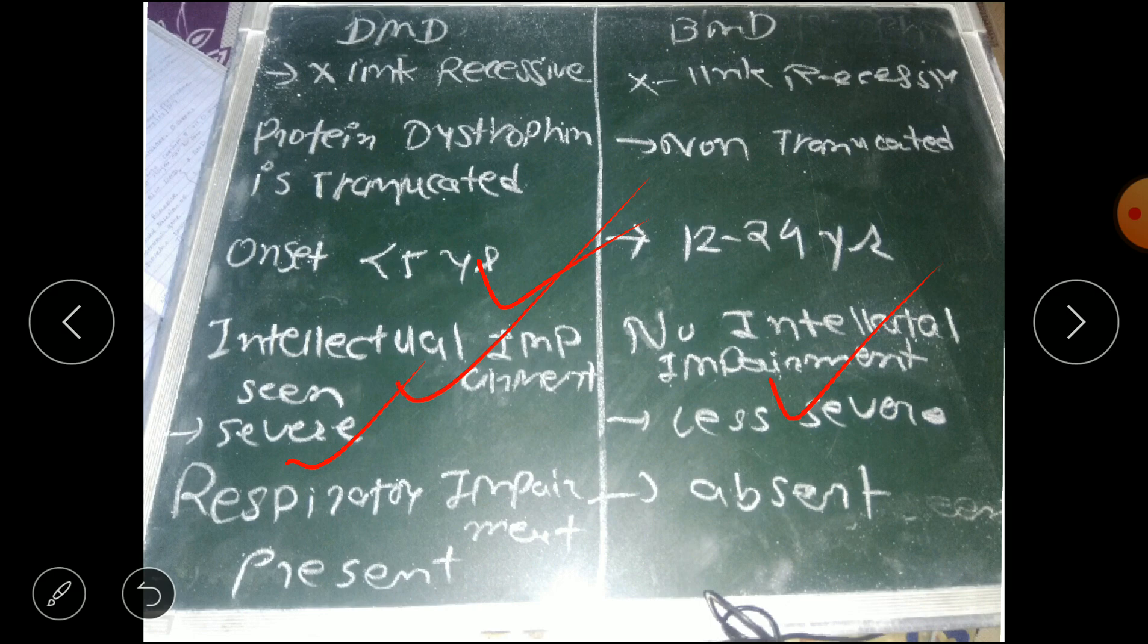In Duchenne muscular dystrophy, there is respiratory muscle involvement, so respiratory impairment is seen. And in Becker's muscular dystrophy, respiratory muscles are normal, so respiratory impairment is absent in Becker's muscular dystrophy. This is all